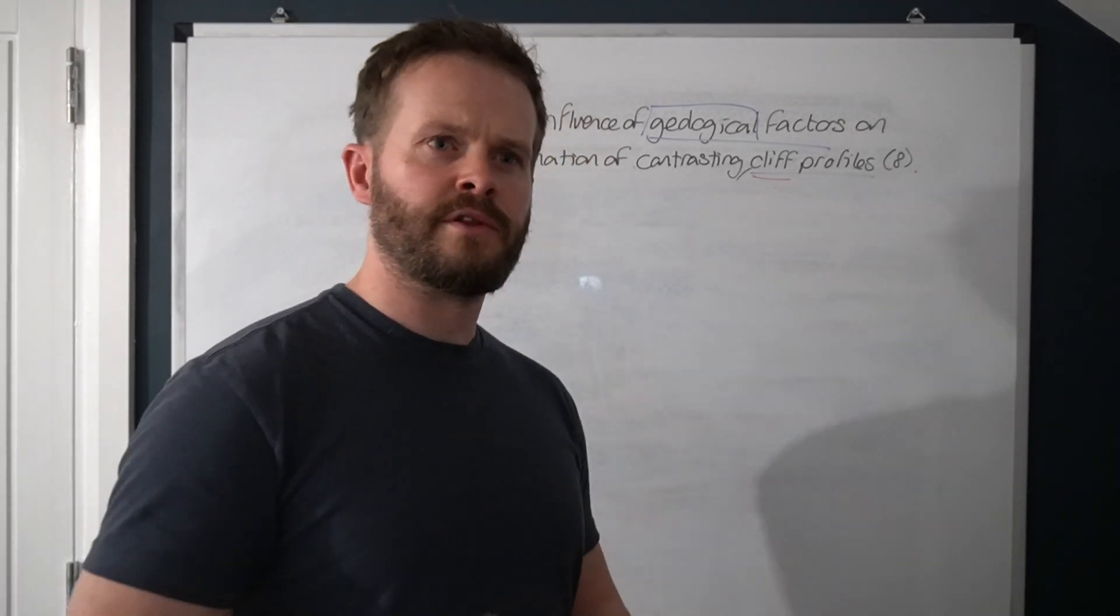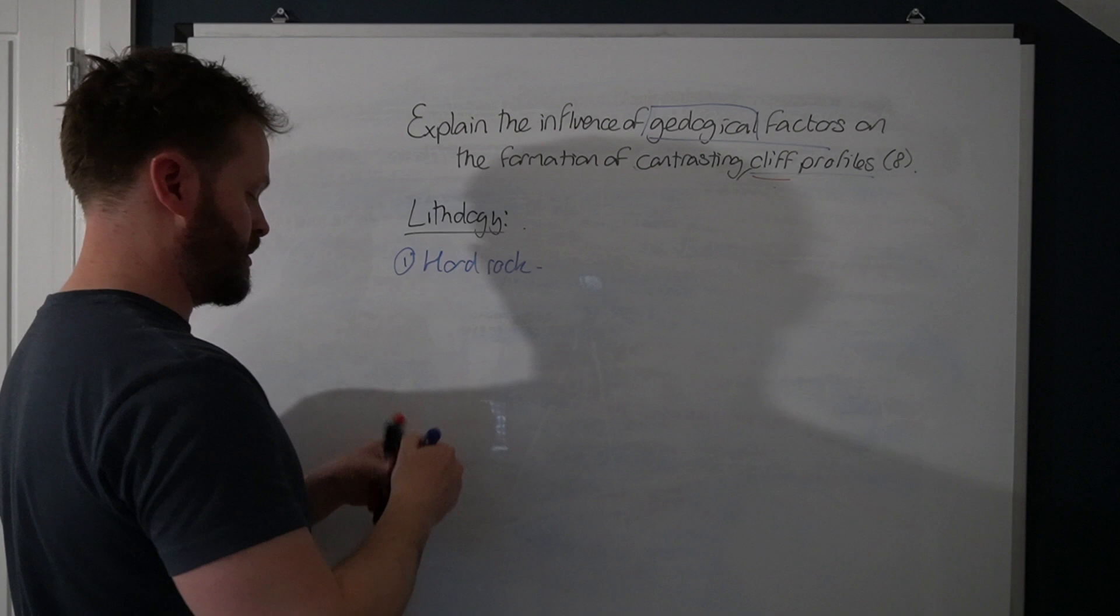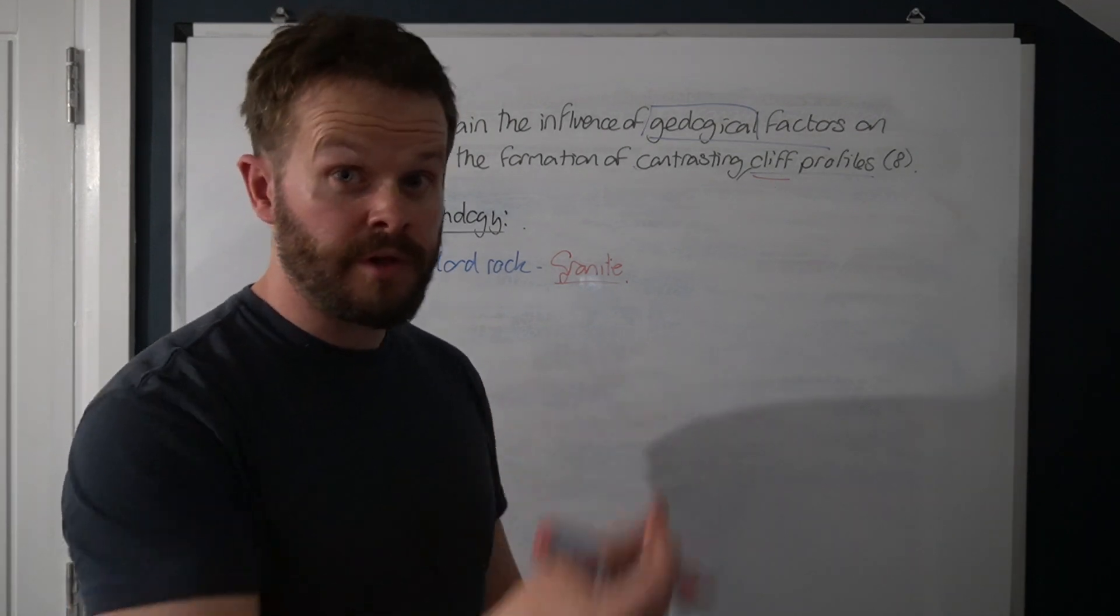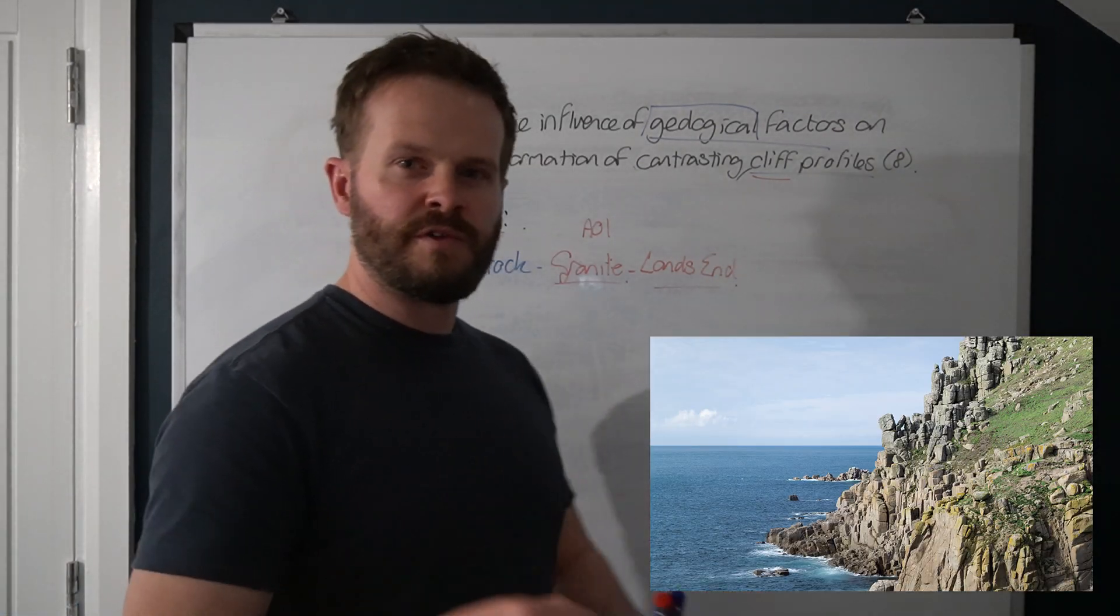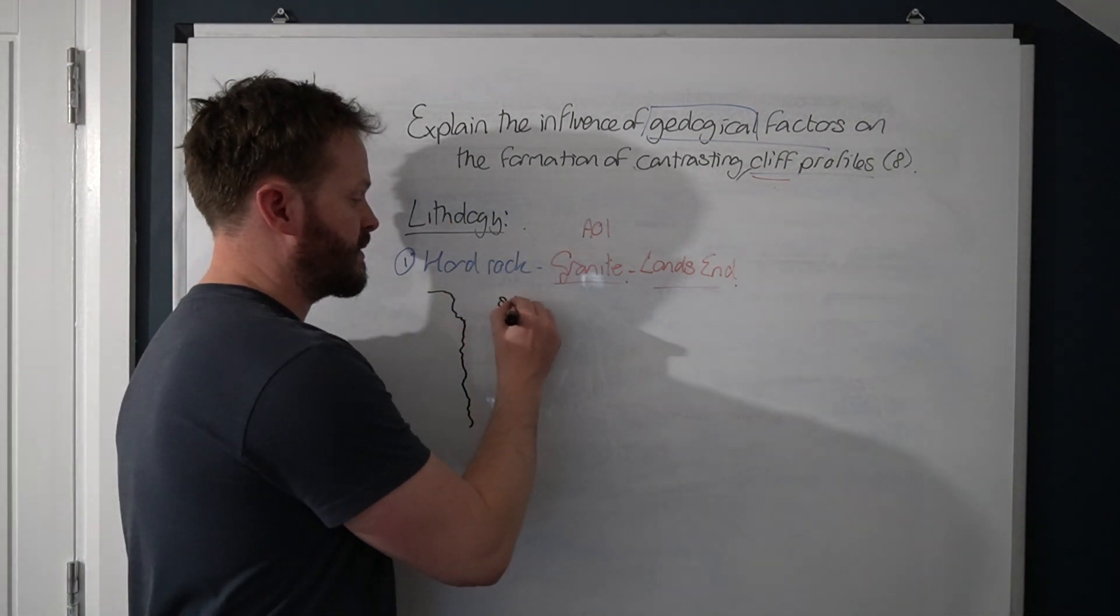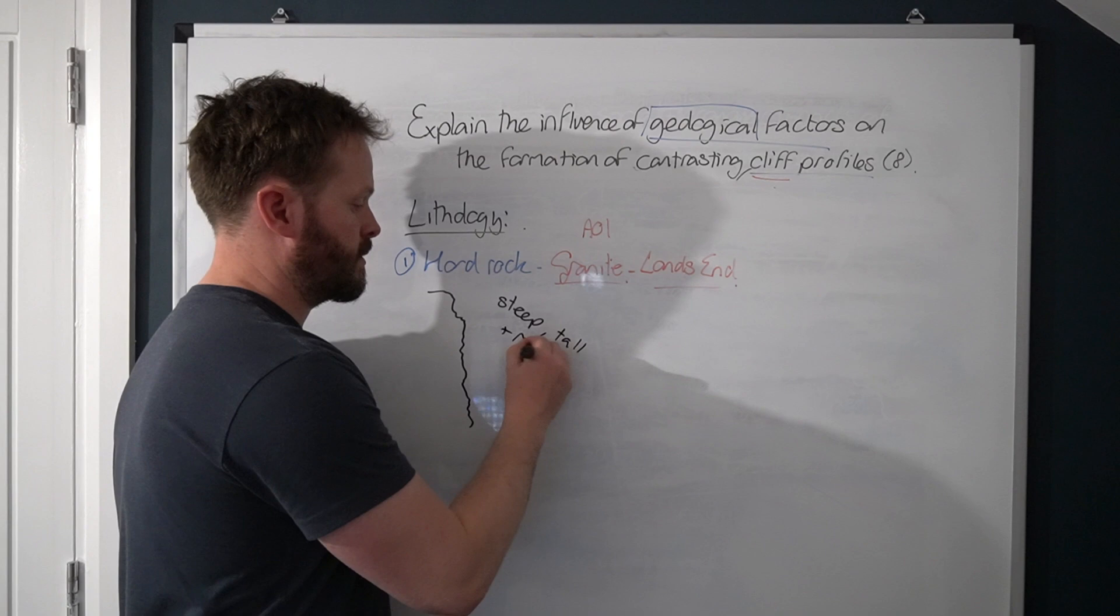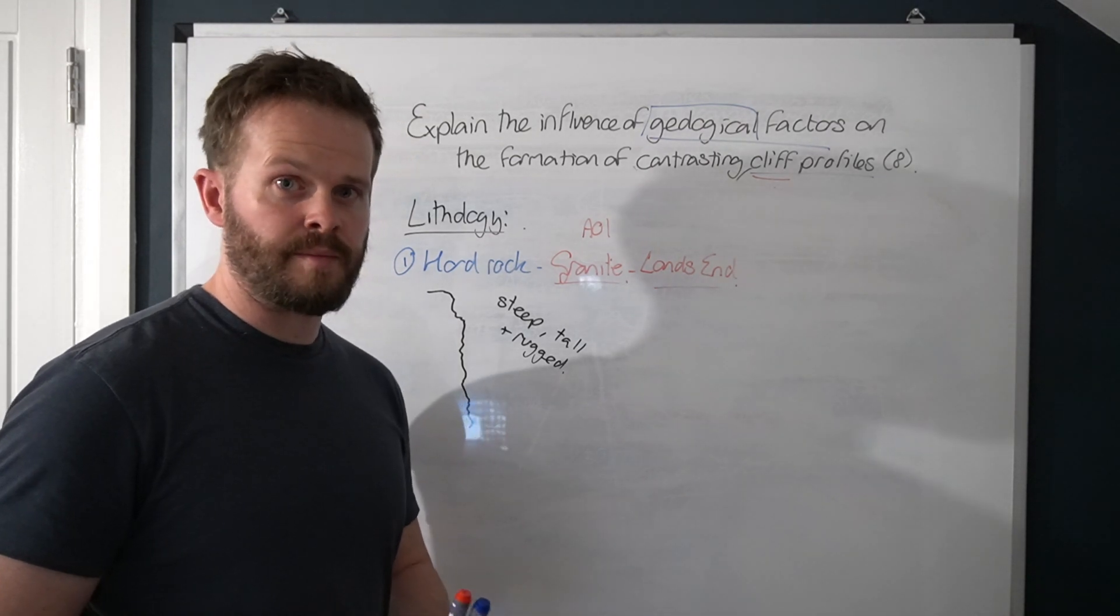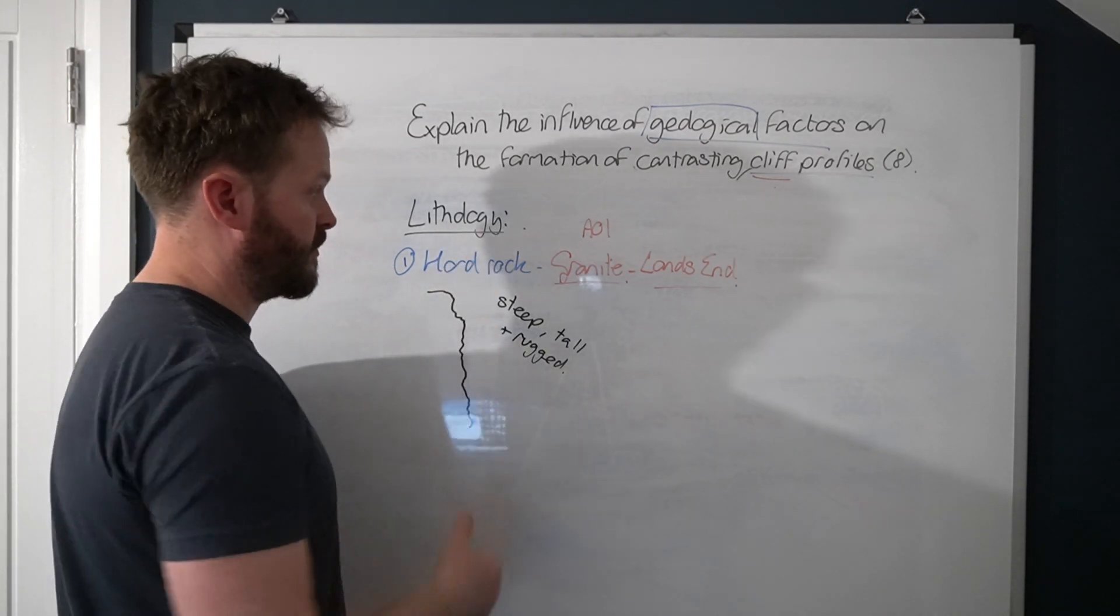So let's first start off with lithology. Like we've already said, if we have a hard rock, something like a granite or an old sandstone, immediately what we've done now is we've gotten the AO1 into our answer. Sometimes it's good to add a place, Land's End. Now, if you can visualize the cliffs at Land's End, they'd be like this. What we describe this as is steep, tall, and rugged. They're more resistant. They've resisted erosion for a long time. So these lithified cliffs, these hard rock cliffs, they're usually tall with a steep face and obviously quite rugged.